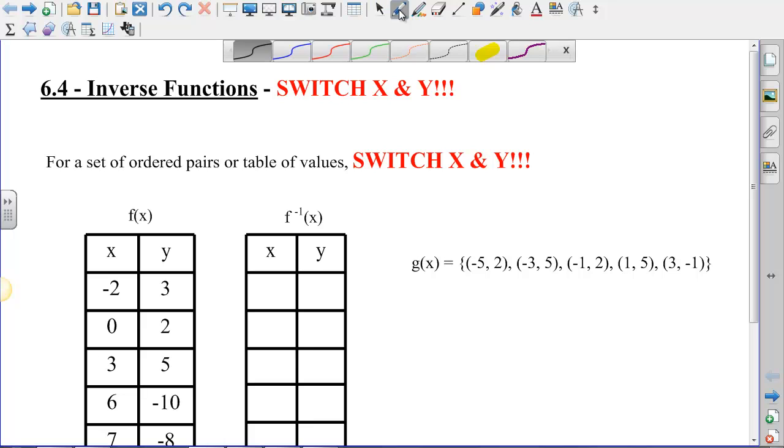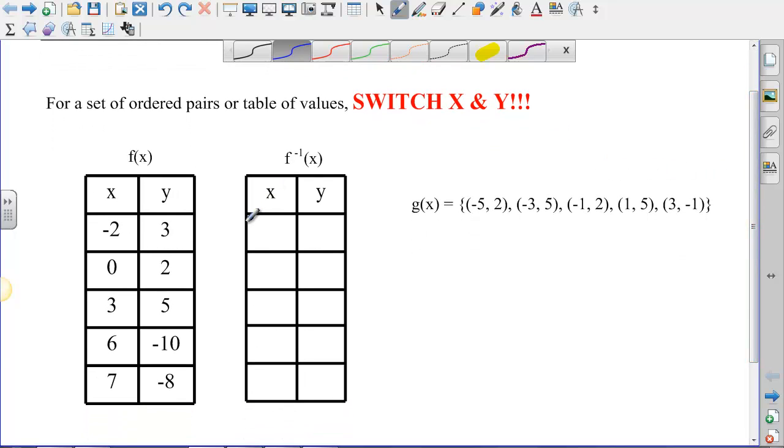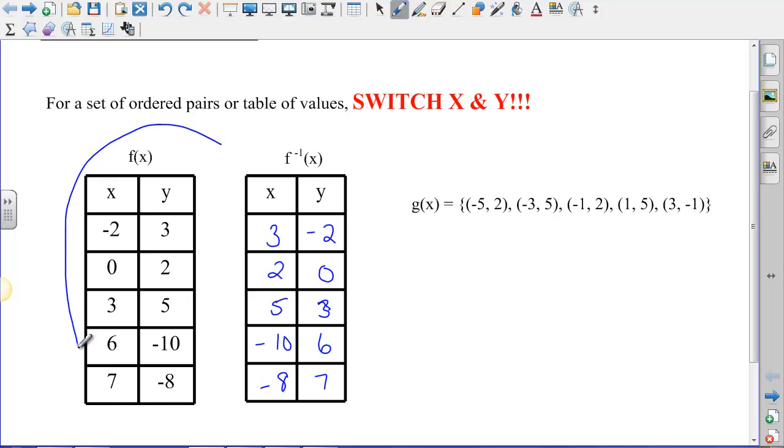We're going to start off with just a random function here, f of x, and we're going to find the inverse for it by switching x and y. So here our ordered pair is (-2, 3) for f(x). To find the inverse, we're going to switch x and y. So (-2, 3) becomes (3, -2). (0, 2) becomes (2, 0). (3, 5) becomes (5, 3). (6, -10) becomes (-10, 6). And (7, -8) becomes (-8, 7). So what I have here now is a table of values that tell me what f inverse is. If f(x) is this function here, then f inverse of x is this function here.